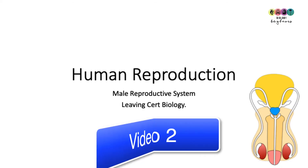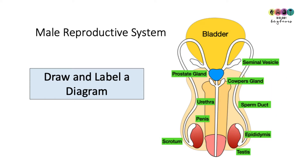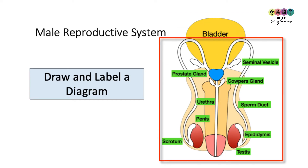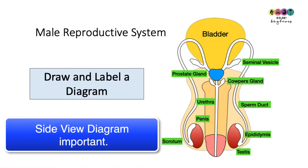This video is the second video on human reproduction and it specifically deals with the male reproductive system. You must be able to draw and label a really good diagram of the male reproductive system with all of these key labels. It's easier to practice drawing from the front, but be mindful that a lot of the diagrams in exam papers feature side-on views, so make sure you can recognize the key features from the side as well.